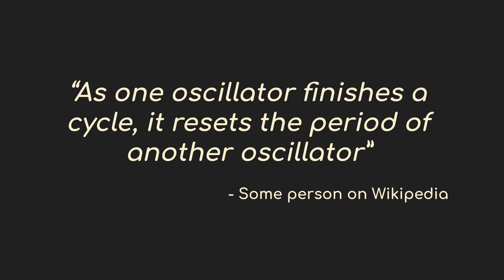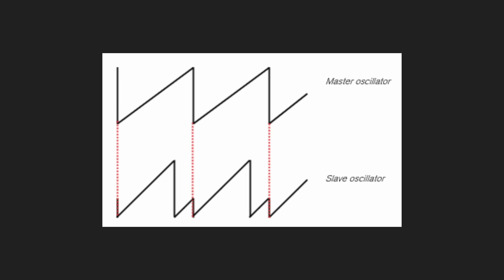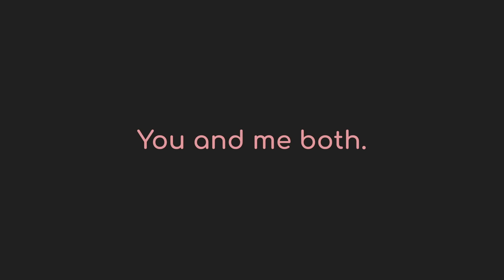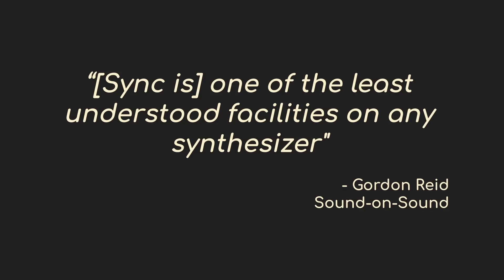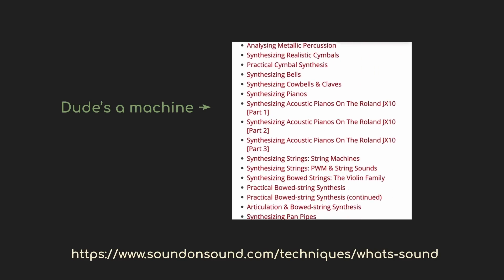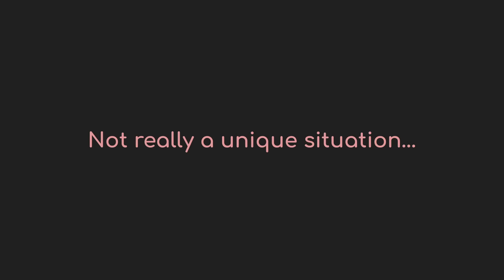On paper, oscillator sync is pretty simple. Wikipedia says: 'one oscillator at the end of its cycle resets another' — clear enough. And then you find diagrams and think, 'cool, this is simple.' Well, this video was supposed to be easy. If I had read just a bit further down on Wikipedia, I'd have seen where they quote Gordon Reed from Sound on Sound saying that sync is one of the least understood elements of any synthesizer — and this guy knows what he's talking about. If you haven't seen his 63-part series on subtractive synthesis, you're missing out — I'll include a link in the description.